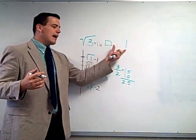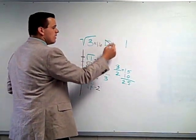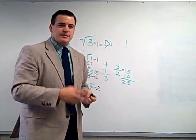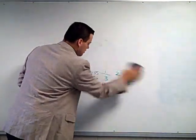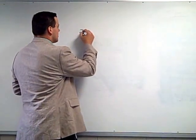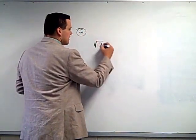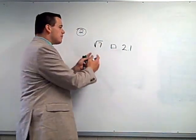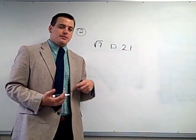Now I've got apples to apples — I can compare 1.6 to 1, and 1.6 is greater than 1. That's the first example we worked on in class. Now I'm going to work number 2 from tonight's homework assignment, which says: compare the square root of 7 and 2.1. So we have apples and oranges again, and I want to get them into the same form.